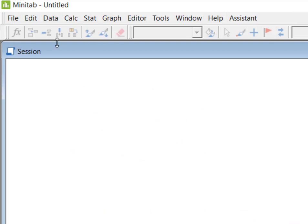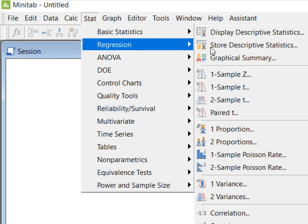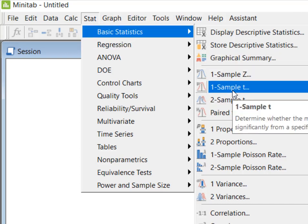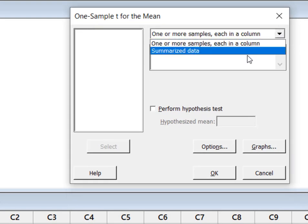Now I'm in Minitab and I'm going to go to Stat, then basic statistics. Remember I'm running a one-sample t-test, and I have summarized data.